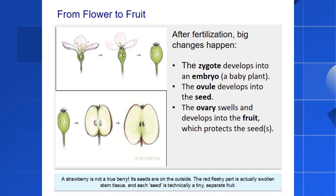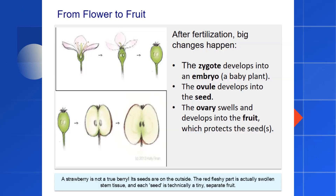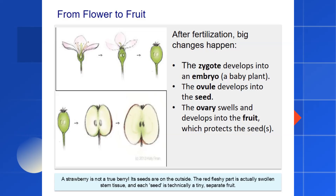Here's a fruity fact that might surprise you. A strawberry isn't technically a berry. The red fleshy part we love to eat is actually the swollen end of a flower's stem. And those little things on the outside that we call seeds — each one is actually a tiny fruit in itself.